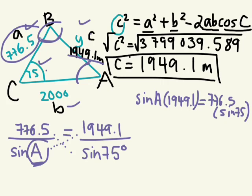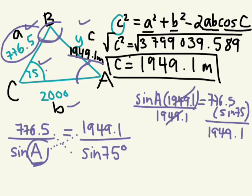How am I going to isolate a? Divide by 1949.1. So I have to divide this side by 1949.1 to cancel this out. So that's going to give me sine a. What is 776.5 times sine 75 divided by 1949.1? What do you get?